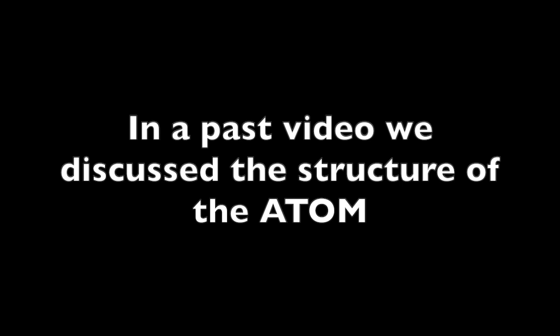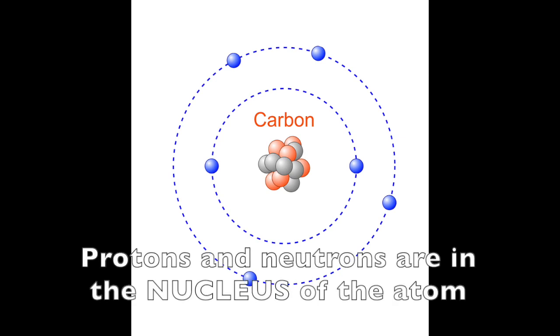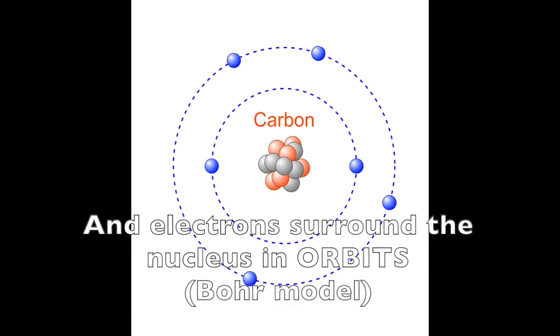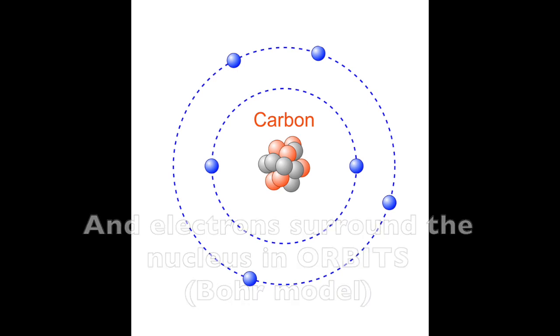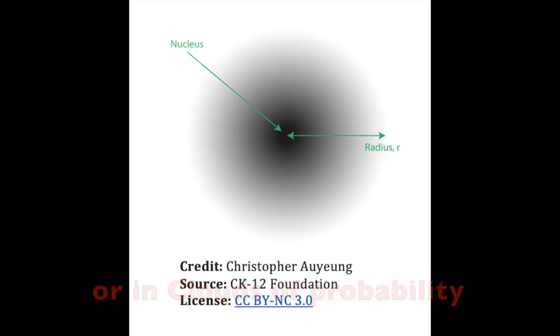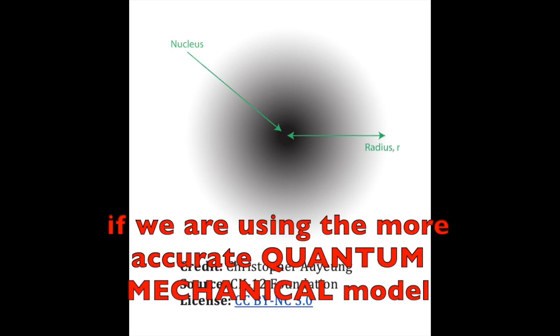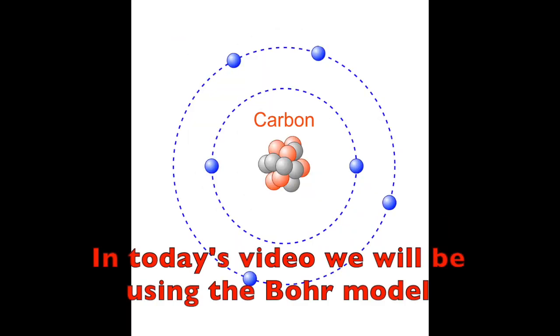In a past video, we discussed the structure of the atom. Just to review, protons and neutrons are in the nucleus of the atom, and electrons surround the nucleus in orbits if we're using the Bohr model, or in clouds of probability if we're using the more accurate quantum mechanical model. In today's video, we will be using the Bohr model because it is convenient for what we are doing.